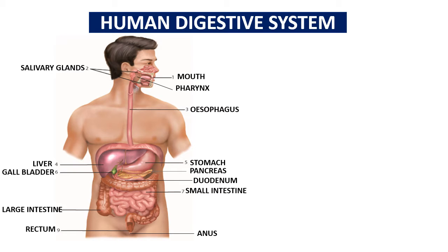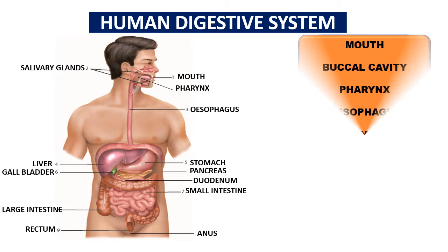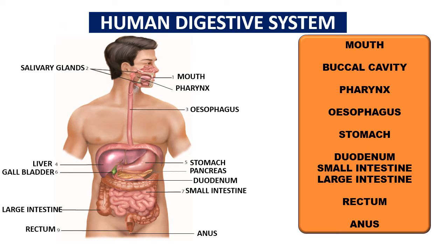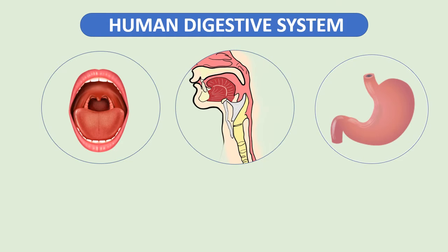In this video we are going to learn about the parts of our digestive system. The human digestive system consists of the gastrointestinal tract and the accessory organs of digestion. The main organs that make up the digestive system are the mouth, buccal cavity, pharynx, esophagus, stomach, duodenum, small intestine, large intestine, rectum, and anus.